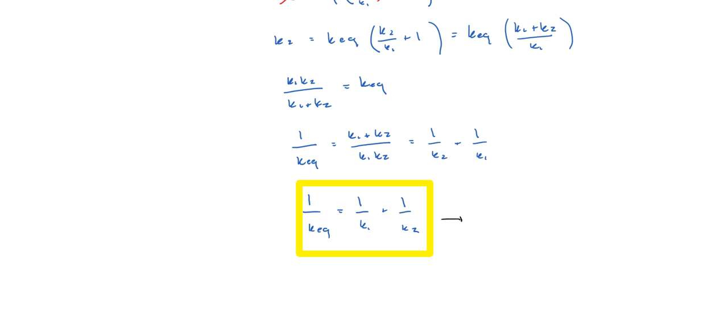But 1 over Keq is equal to the sum from i equals 1 to N, if there are N springs in series, of 1 over Ki.